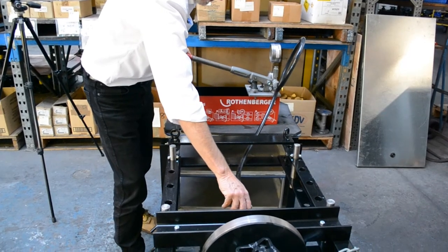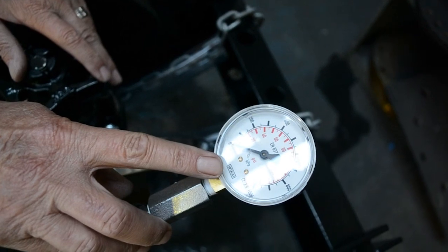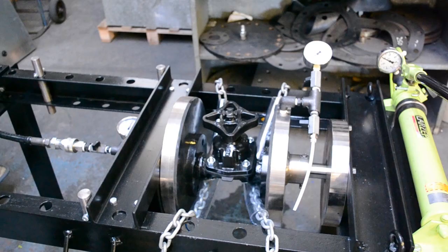Operate the inlet pump until the gauge reaches 1.1 times line pressure and close the inlet valve. If pressure remains at zero, the valve has passed the seat test.